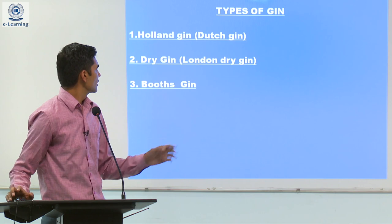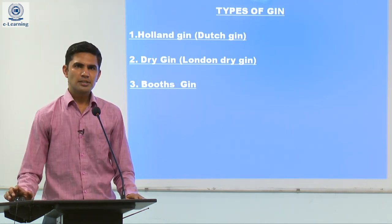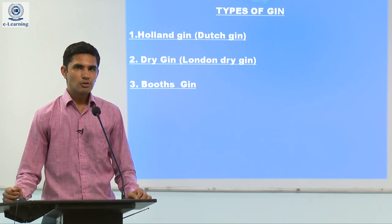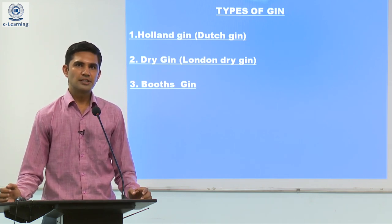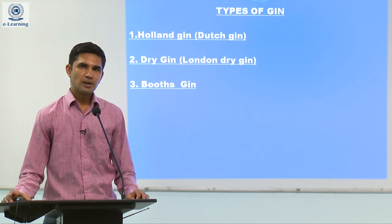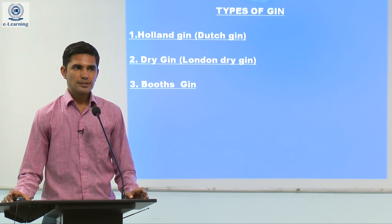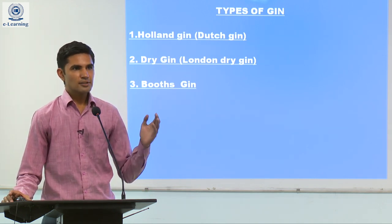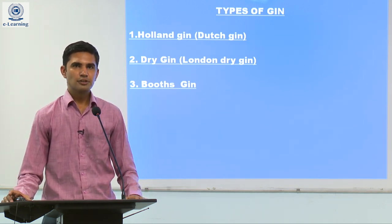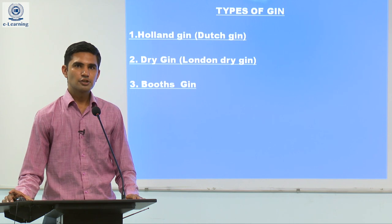Now we come to the types of Gin. There are different types: first we have Holland Gin, also called Dutch Gin. Holland Gin is a full-bodied Gin in which we use equal quantities of malted barley, barley, and red corn. After fermentation we do the distillation process.